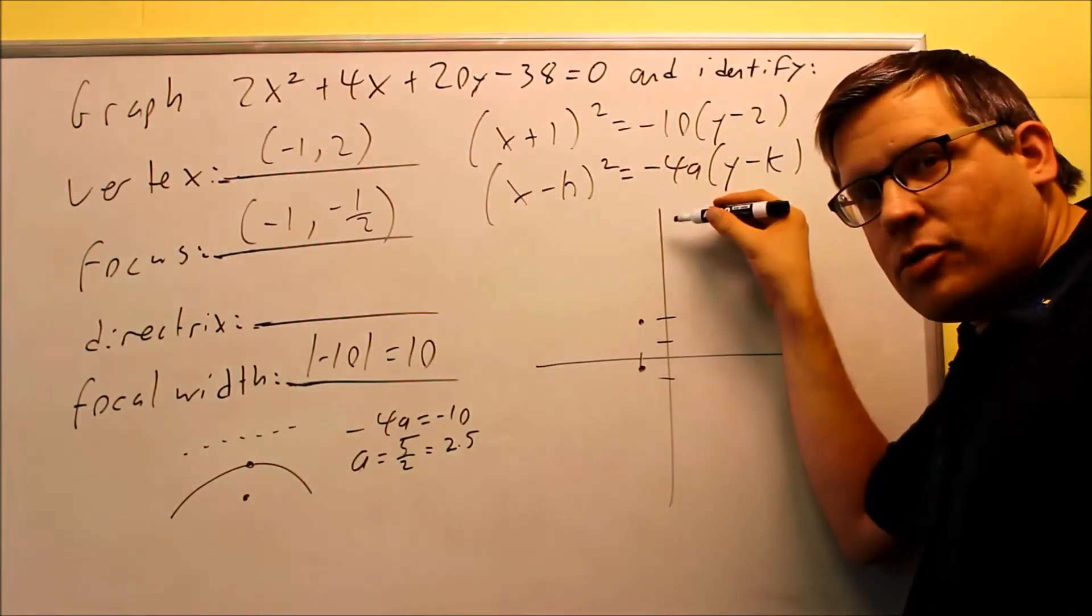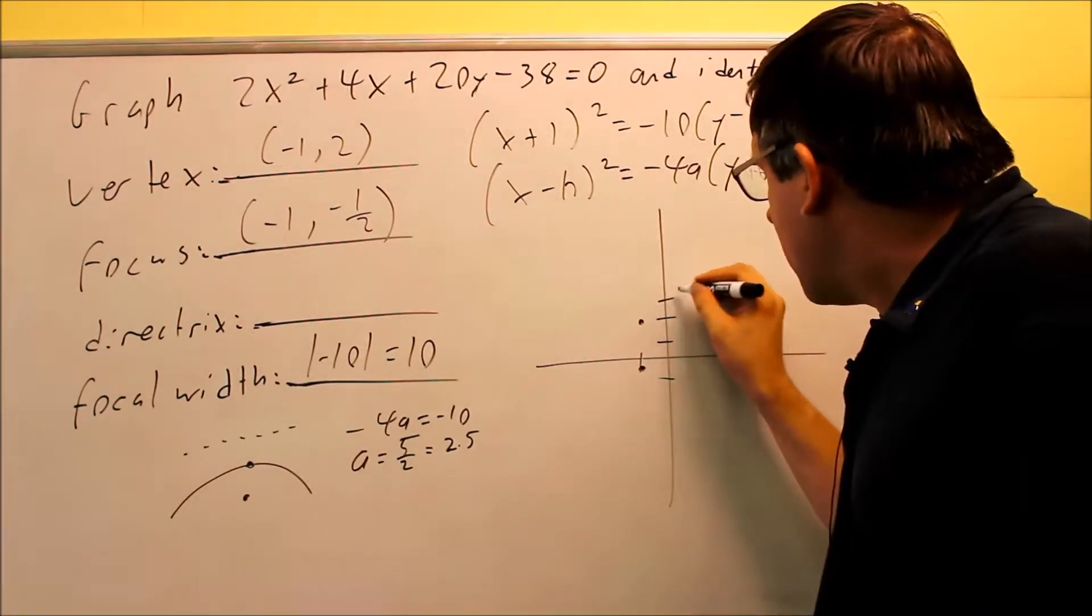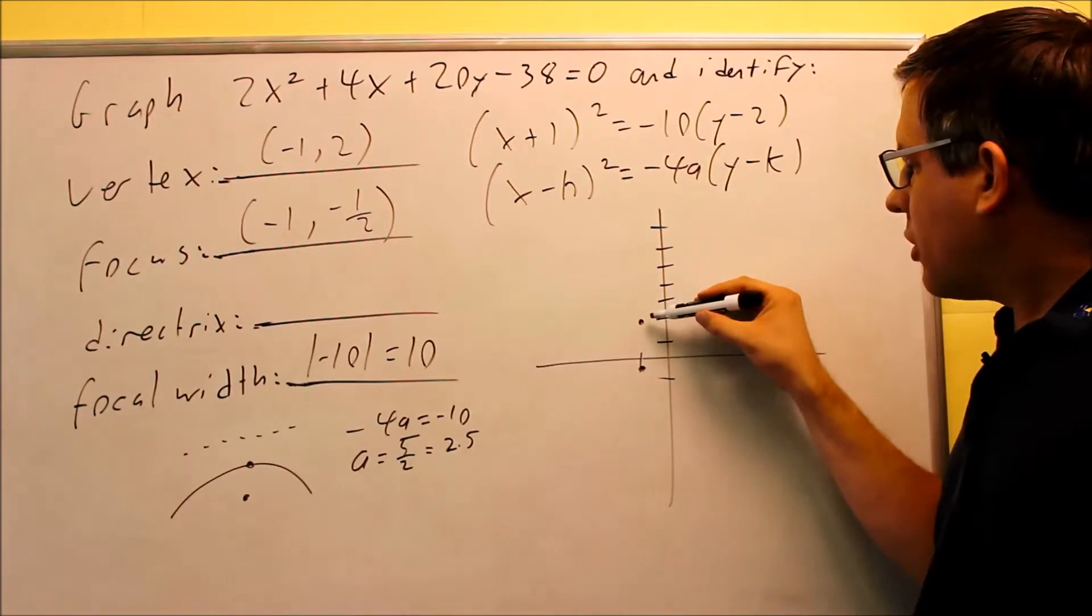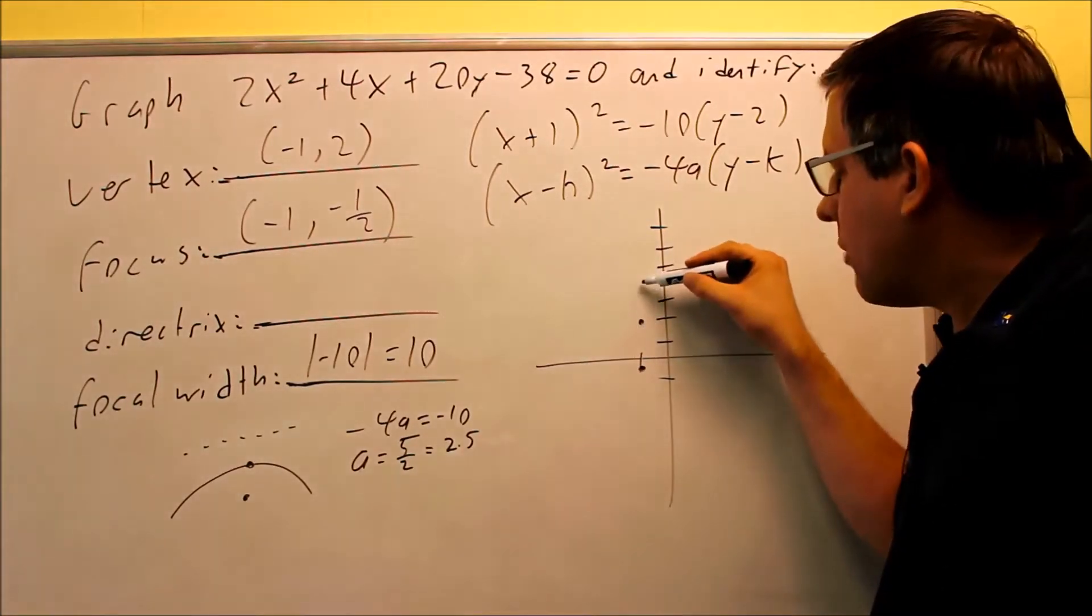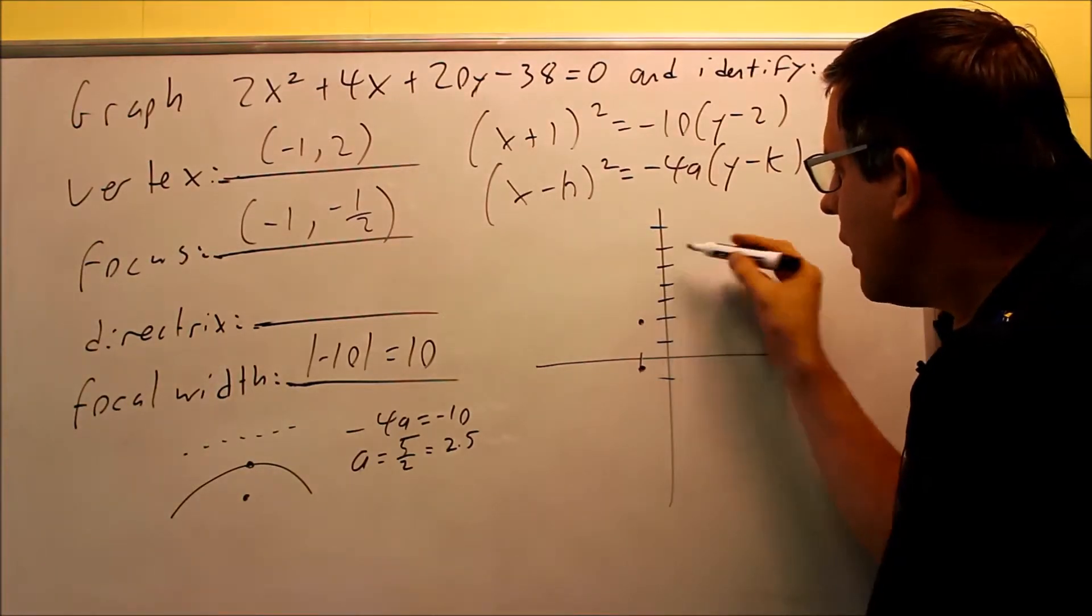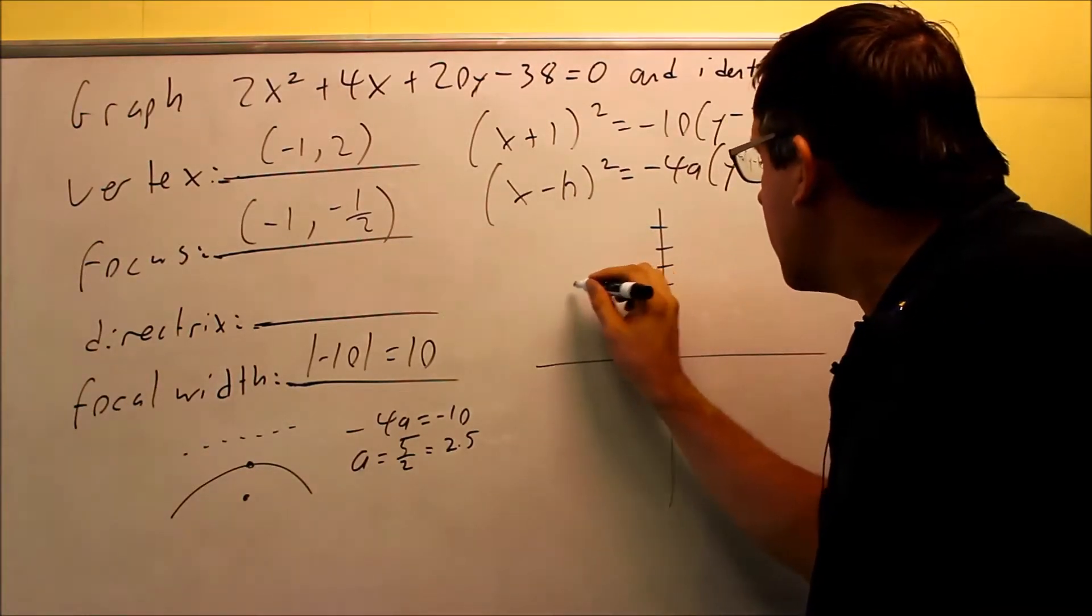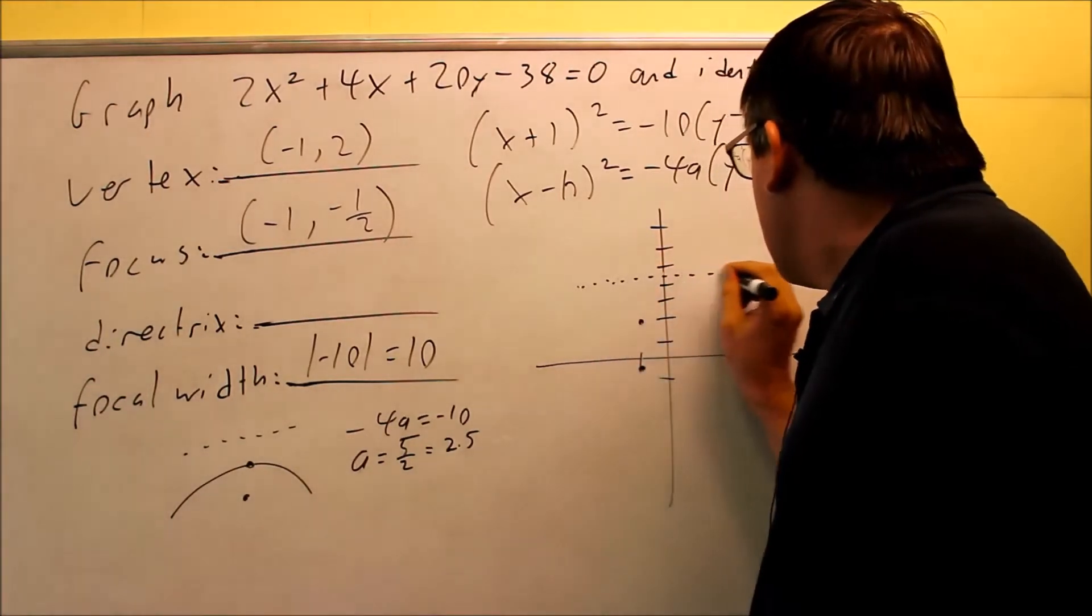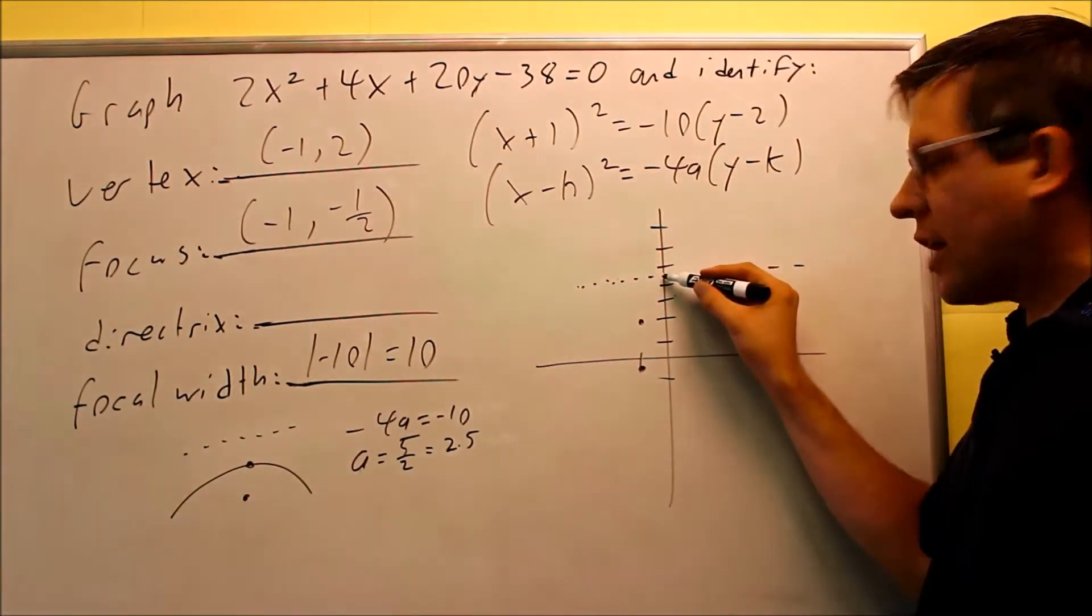Now I'm going to go up 2.5. So from here I'm going to go 1, 2, 3, 4. Basically I'm going to go from here, up 2.5. So if I go up 2, I go up 2 to here. And then that basically is going to put me right here at that level. So I go up 2 and an extra half.